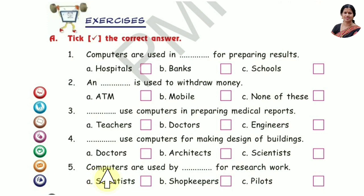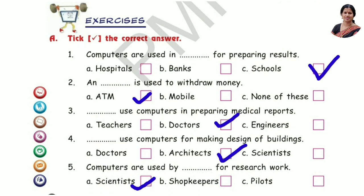Question 5: Computers are used by DASH for research work. The answer is Option A: Scientist. Here the answers are given. See the answers and do it in your book.